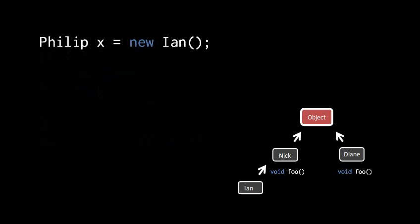Finally, when a class implements an interface, all of the descendants of that class are considered to also implement the interface. So here, if Nick has a subclass Ian, well then Ian is considered a valid kind of Philip object.